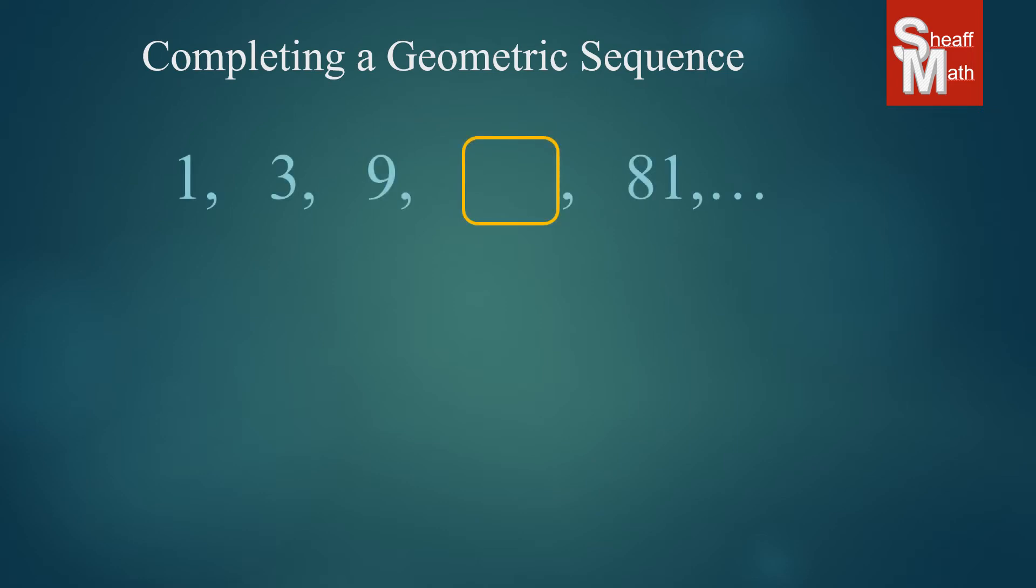So here's an example. We have this particular sequence: 1, 3, 9, blank, and then 81. And so some of you may be able to figure this out in your head, what this is multiplying by, what that common ratio is. But what we're going to do on each of these examples is we're going to go through the process that you should always go through just to make sure that you're right.